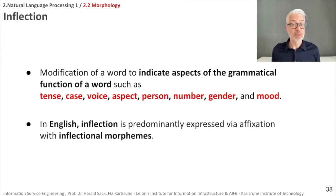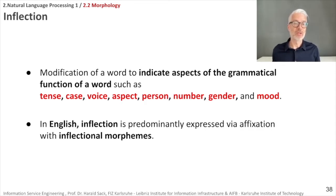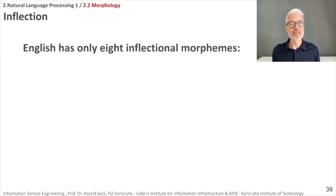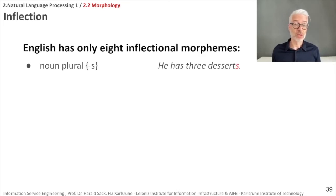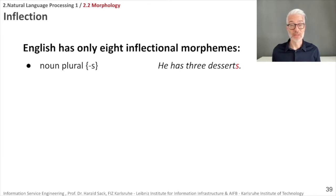In English, inflection is predominantly expressed via affixation with inflectional morphemes. English has only eight inflectional morphemes. First, the noun plural 's': to create a plural, you simply add 's' to regular nouns — for example, 'he has three desserts.' Second, the noun possessive 's': to say 'Betty's dessert,' you add an apostrophe plus 's' to the name.